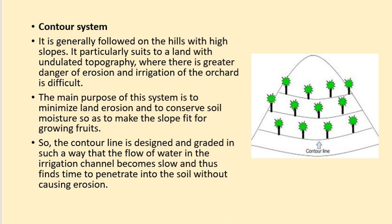Next is the contour system of planting. It is generally followed on hills with a high slope, and particularly suits land with undulated topography where there is a greater danger of erosion and irrigation is difficult. The main purpose of this system is to minimize land erosion and to conserve soil moisture so as to make the slope fit for growing fruits. The contour line is designed and graded so that the flow of water in the irrigation channel becomes slow and finds time to penetrate into the soil without causing erosion.